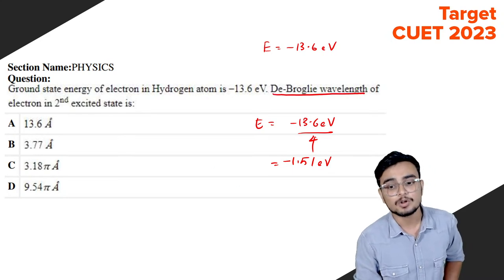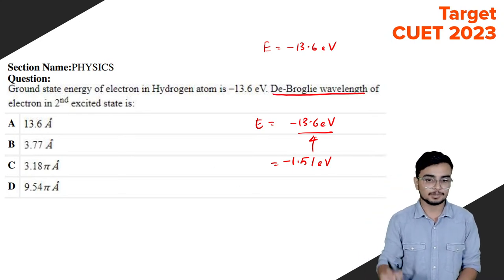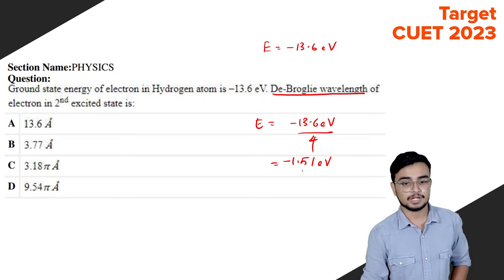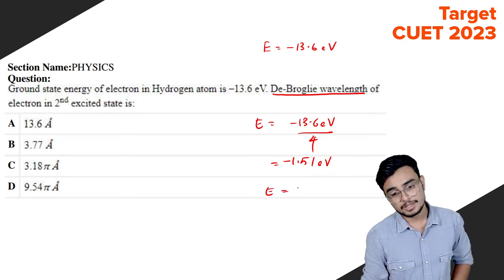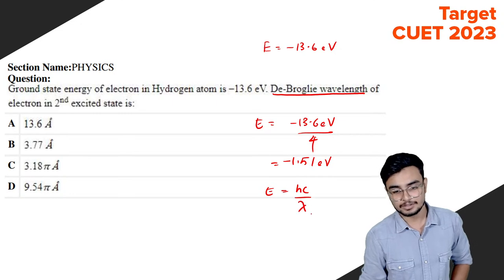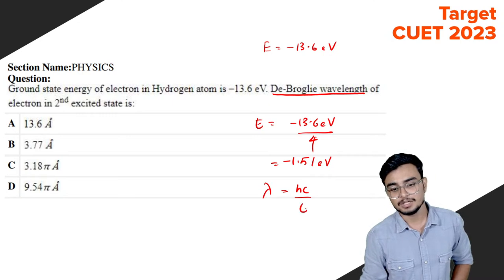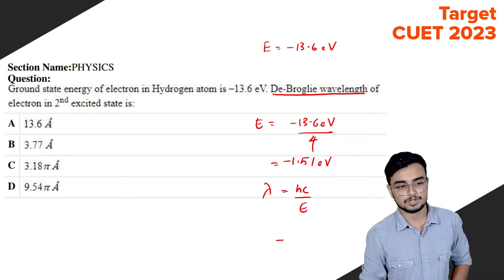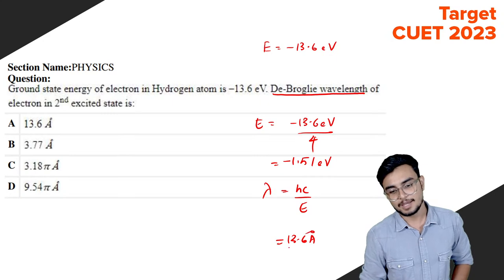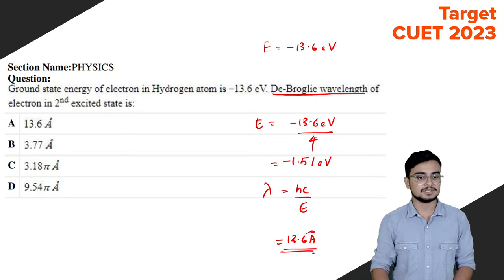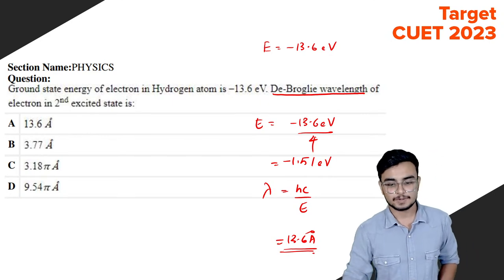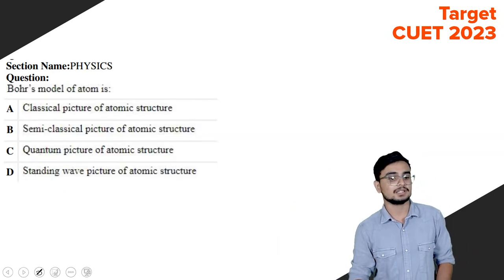For the de Broglie wavelength, we use E equals hc over lambda, so lambda equals hc over E. Substituting the values, we get the wavelength as 13.6 Angstroms. The correct answer is 13.6 Angstroms.